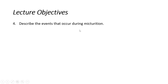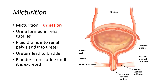That brings us to objective four, which concerns micturition. We're going to describe the events that occur during micturition — the final stage of clearing excretory products from the body. This is how we get rid of the waste that has been filtered and fine-tuned as urine, sent to the bladder for storage, and eventually eliminated. Micturition is the technical term for urination, where the filtrate is released from the bladder into the urethra.